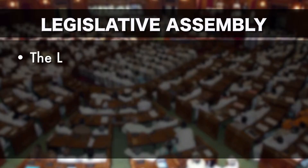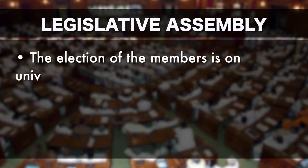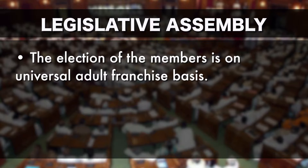Now let us take up the composition of the Legislative Assembly. The Legislative Assembly is a popular house and its members are directly elected by the people from the territorial constituency of the concerned state on a universal adult franchise basis. The maximum strength of a State Legislative Assembly is fixed at 500 and the minimum strength is fixed at 60. However, in case of Sikkim, Arunachal Pradesh, and Goa, the minimum strength is fixed at 30, as provided in Article 371.